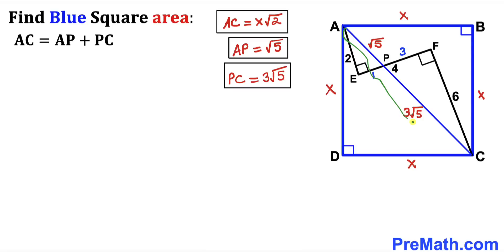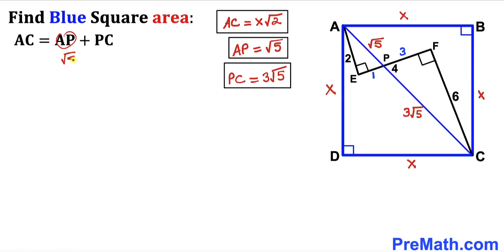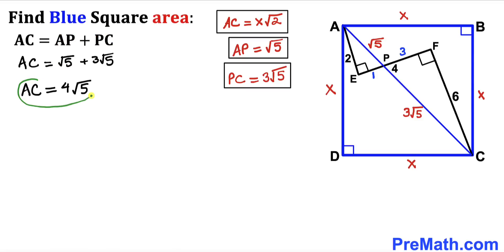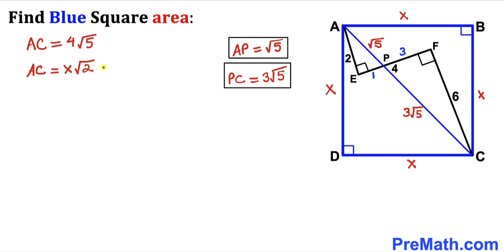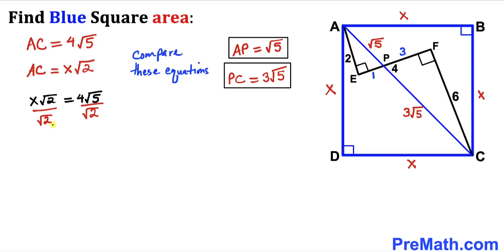The whole diagonal AC = AP + PC = √5 + 3√5 = 4√5. We also established that AC = X√2. Setting these equal: X√2 = 4√5. Dividing both sides by √2 to isolate X gives X = 4√5/√2 = 4√(5/2) = 2√10... simplifying, X = 4 times square root of (5/2).